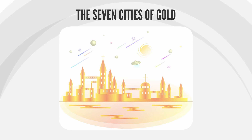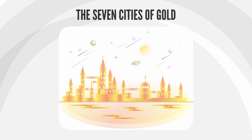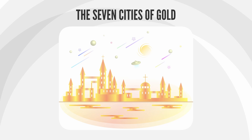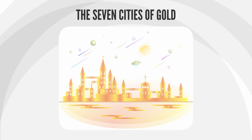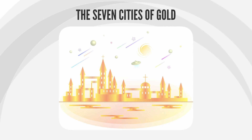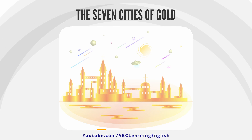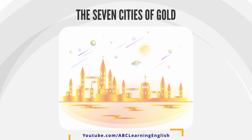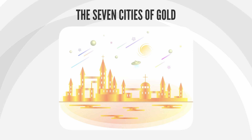So he went to find the Seven Cities of Gold. He took along three hundred men, many horses, and extra food. They headed west. Coronado wanted to achieve his goal very badly. Coronado and his men rode for many days. Then they saw some cities. We found the Seven Cities of Gold! his men yelled.